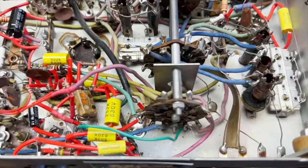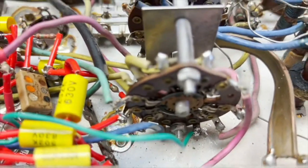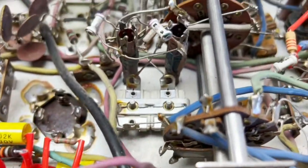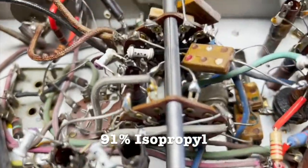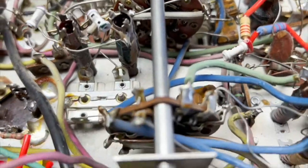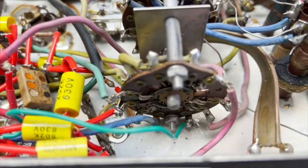Before I apply power, I'm going to clean up the contacts on the selector switch because I don't think they've been cleaned in their lifetime. I'll just use a swab with some alcohol and gently take off some of the oxidation. Don't work too hard at it because it's easy to damage the switch.